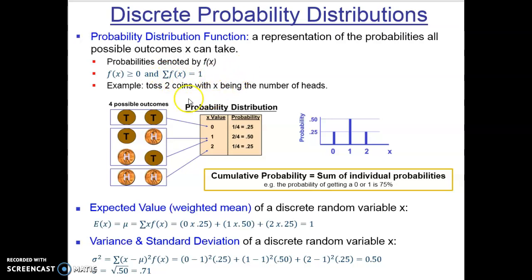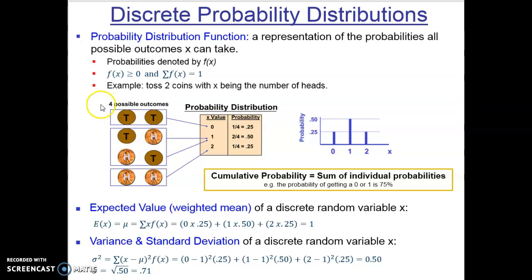As an example, let's say we toss two coins and define x as the number of heads. By tossing two coins there are essentially four possible outcomes: two tails, tail-heads, heads-tails, or two heads. This is the sample space — all possible outcomes that can occur from the experiment of tossing two coins.